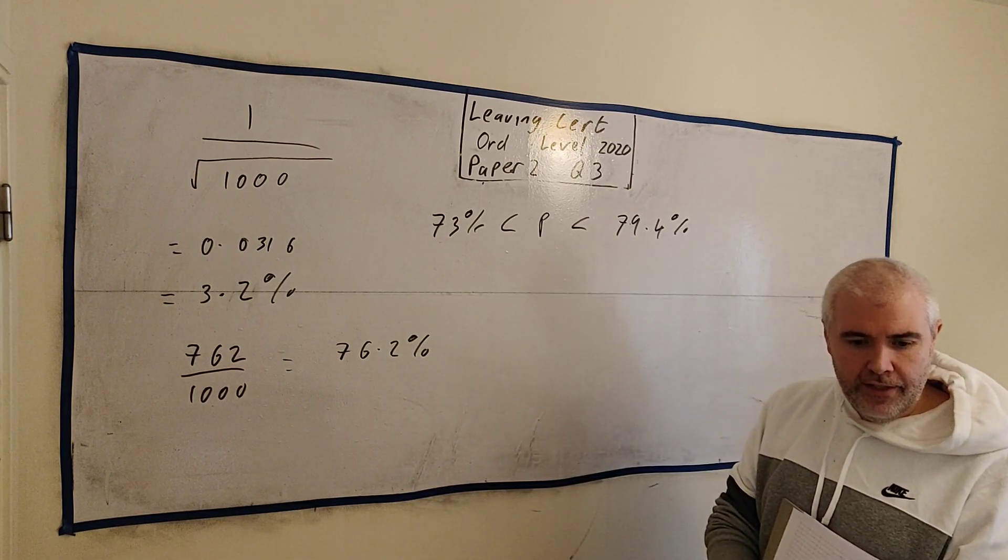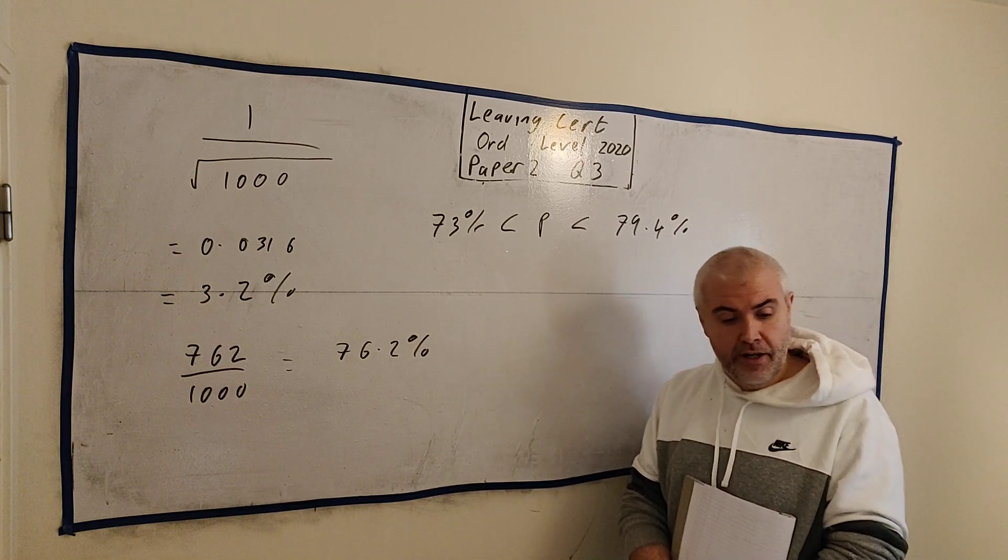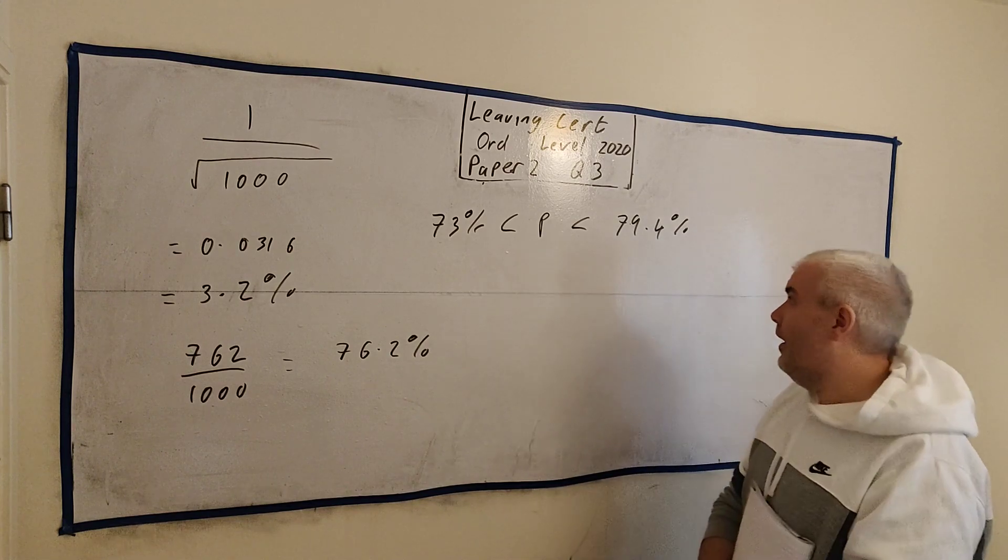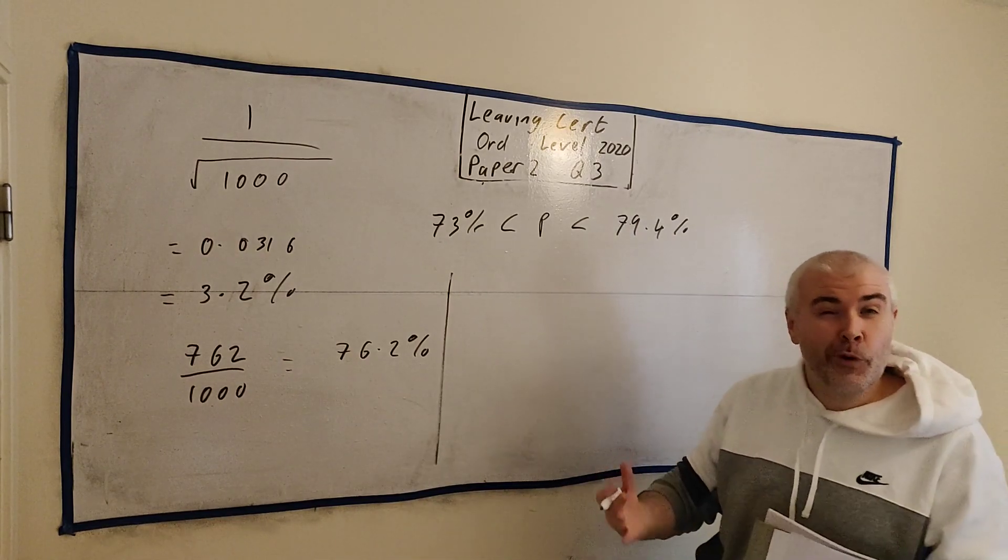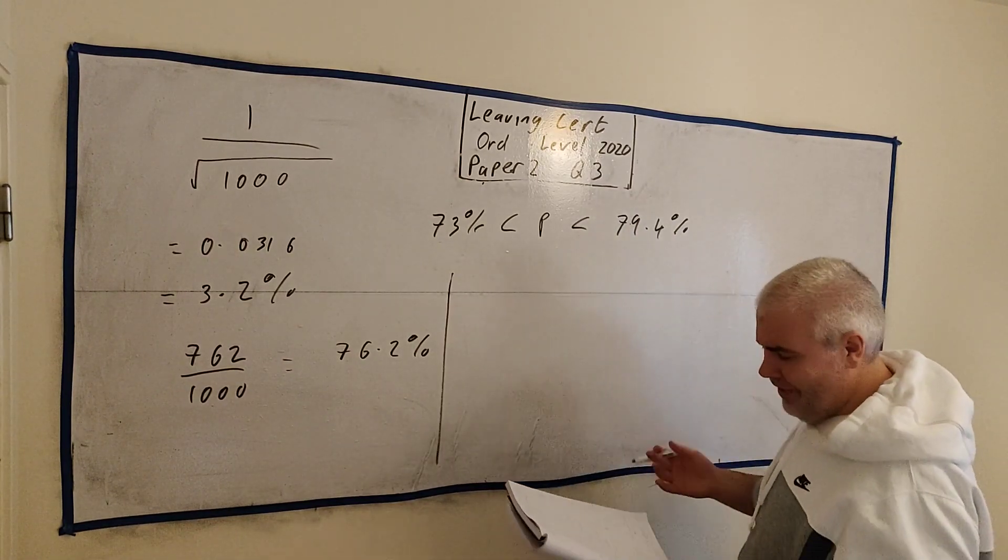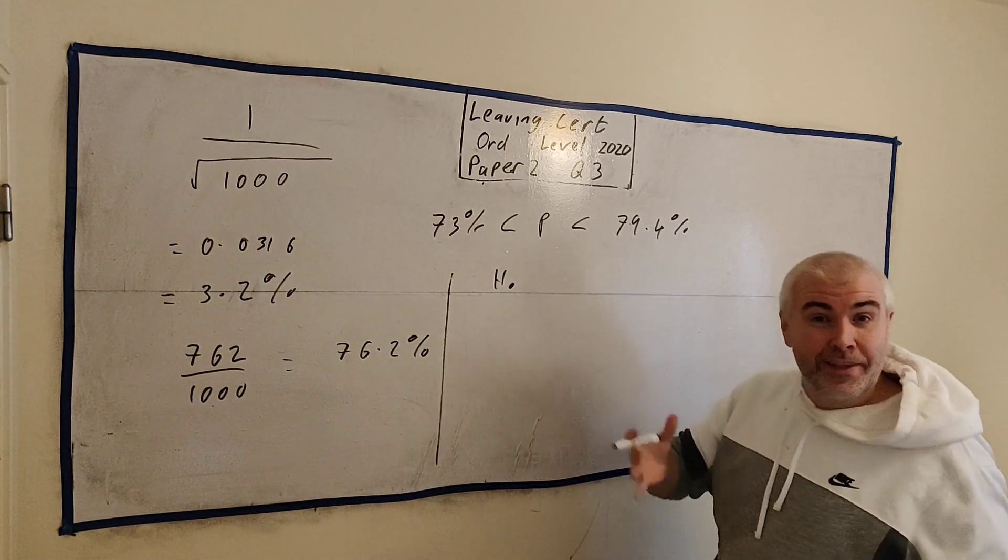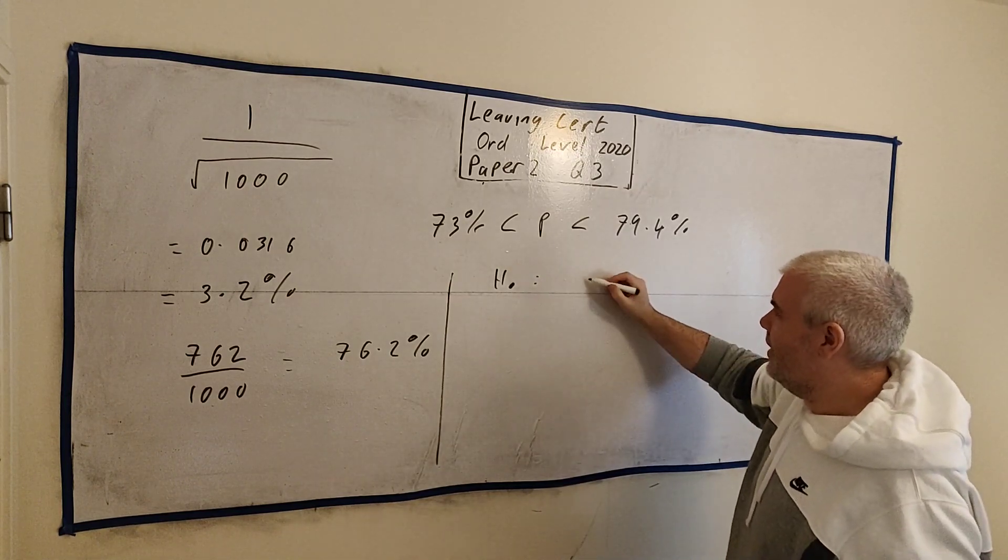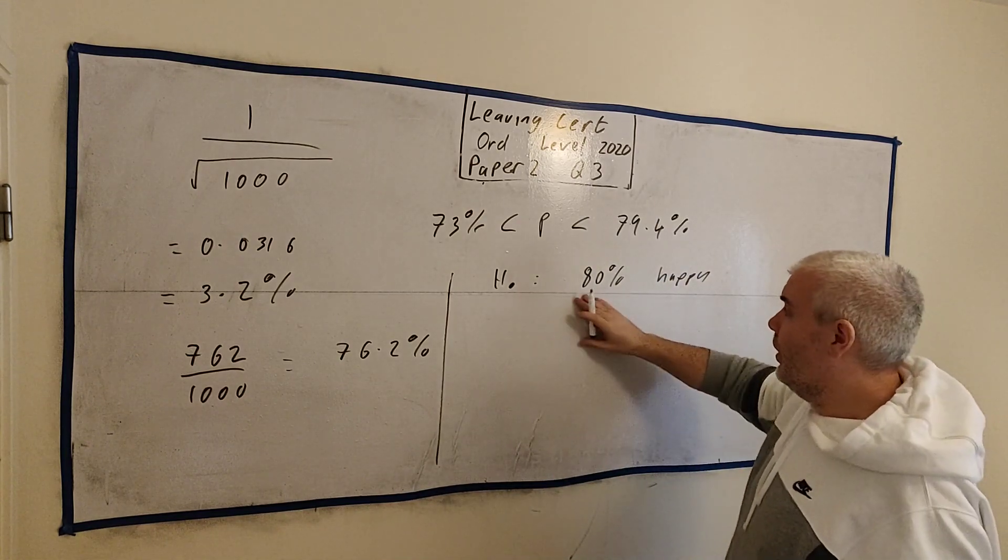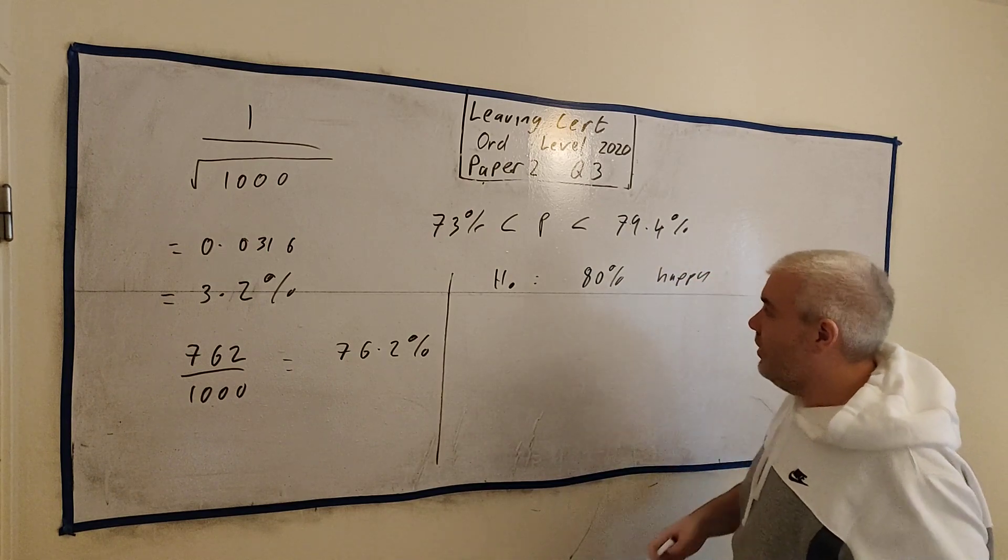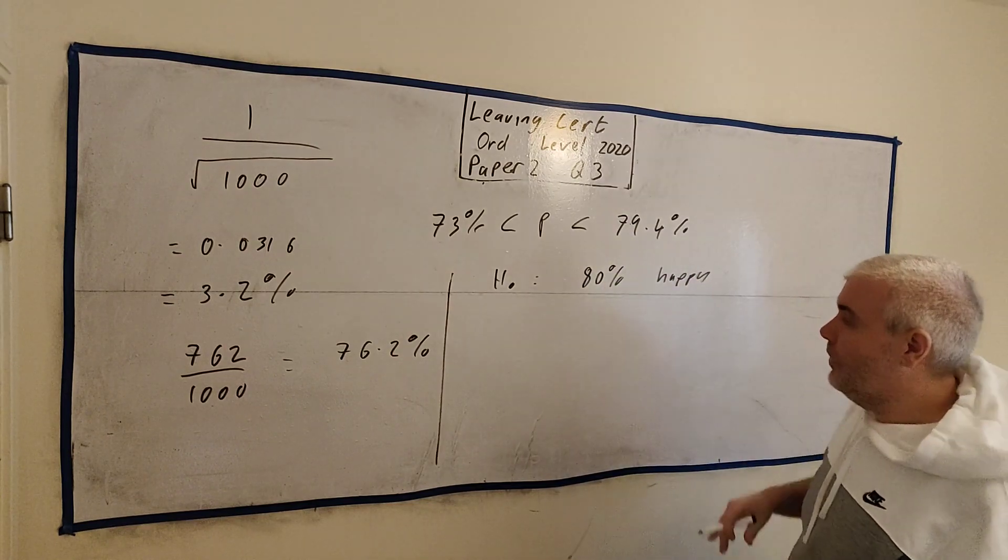Let's move on to part three. In part three, they tell us that a media company claims 80% of people are happy to give their credit cards online. Do a hypothesis test. Well, 80% is outside my confidence interval. So I can already say, no, I don't agree with that. But they want you to do it a bit more officially. They want you to make the null hypothesis. What they said, basically. That's all that it is. They said 80% happy. The examiner is just looking for 80% in here somewhere.